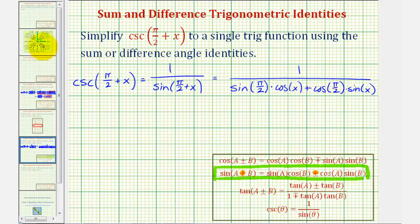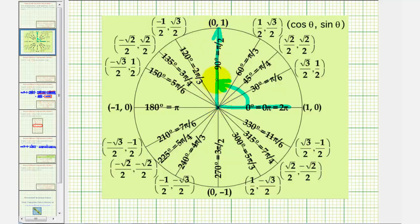But for a quick review, here's the terminal side of pi divided by two radians. And because we're looking at the unit circle where x equals cosine theta and y equals sine theta, notice that cosine pi divided by two is zero and sine pi divided by two is one.